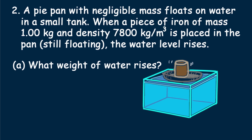A. What weight of water rises? The answer is given by Archimedes principle. The weight of water that rises, that is, displaced, is equal to the weight of the piece of iron. So, Mg equals 1 kilogram times 10 newtons per kilogram equals 10 newtons.